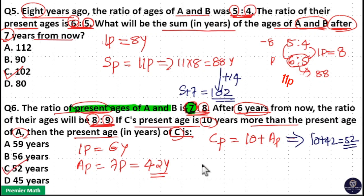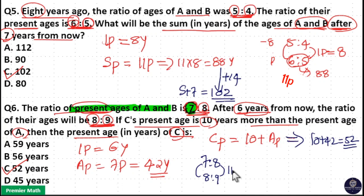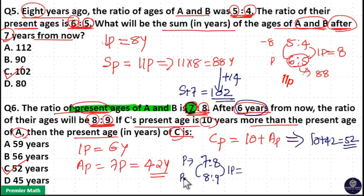To recap: 7 is to 8 is the present age ratio of A and B, and after 6 years the ratio is 8 is to 9. You can see 8 changed to 9 and 7 changed to 8, so total one part increment. The part difference is the same — that is one part. This one part is given as 6 years. The present age ratio and the after 6 years ratio have a difference equal to 6 years, which means one part is equal to 6 years.